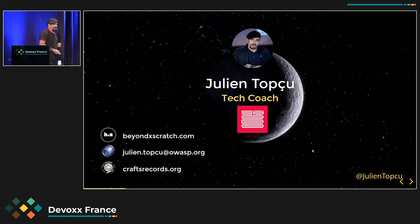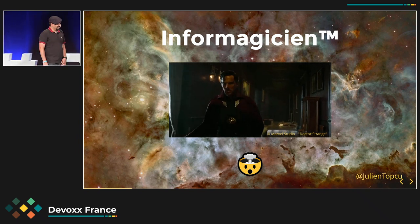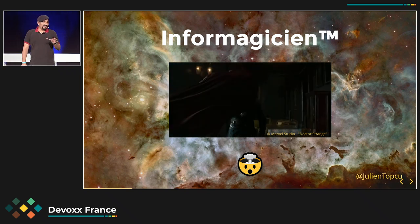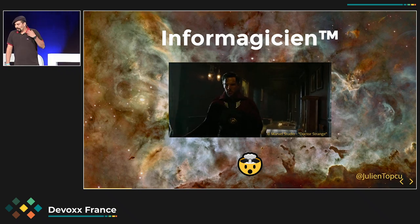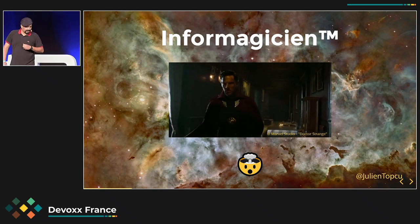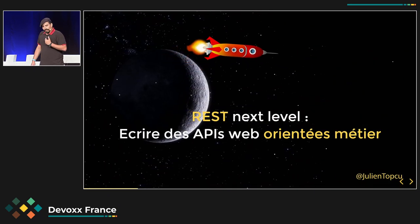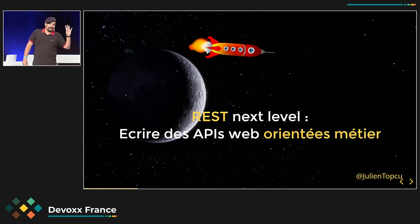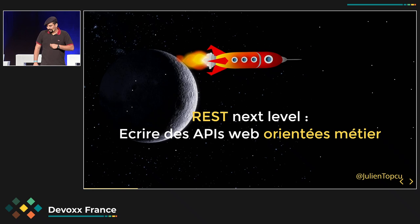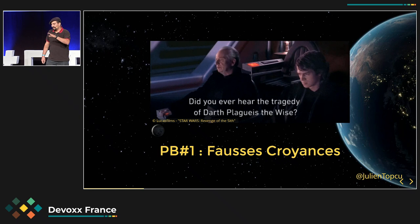Je vais vous dire pourquoi ça marche. C'est grâce à la technique qui va nous ramener de l'intention métier dans notre API. Pour moi, il y a quatre grandes raisons pour lesquelles on n'arrive pas à mettre du sens métier dans nos API REST. La première, c'est qu'on a des fausses croyances vis-à-vis de REST.